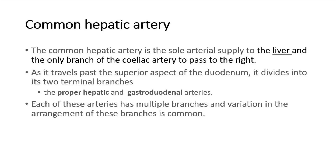Next, the common hepatic artery is the sole arterial supply to the liver and the only branch of the celiac artery to pass to the right. As it travels past the superior aspect of the duodenum, it divides into its two terminal branches: the proper hepatic and gastroduodenal arteries. Each of these arteries has multiple branches, and variation in the arrangement of these branches is common.